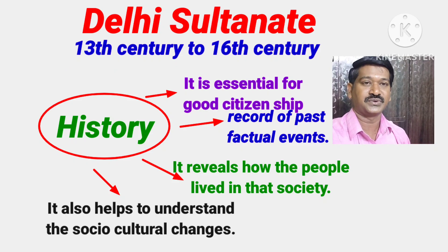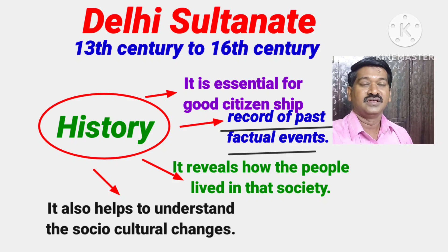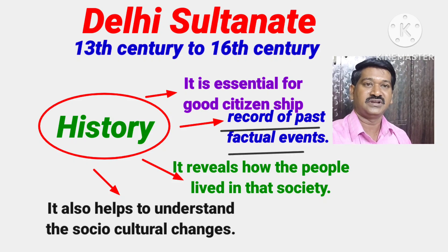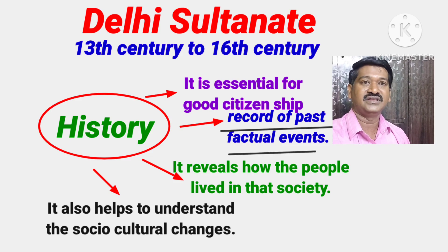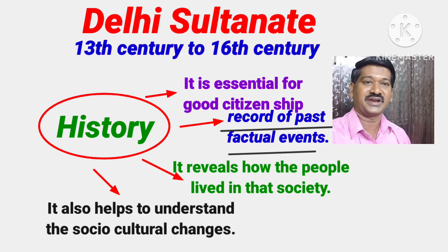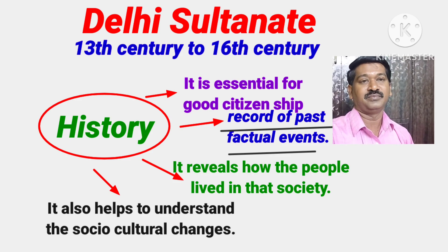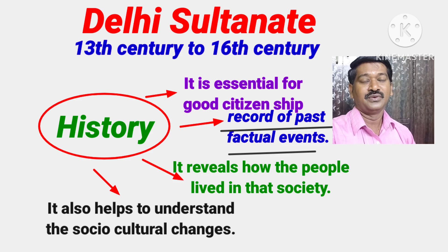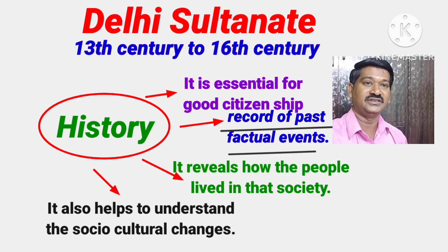Before going to discuss about these rulers, these famous rulers, we must know what is history. History means history is a record of the past factual events. Past factual events means in the past, what real incidents, real events occurred. Those events were recorded and written in history. By studying history, we can know about those real events and real incidents that happened in the past.